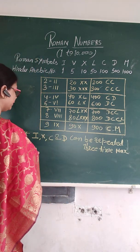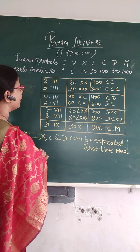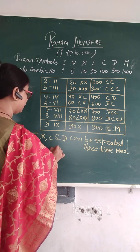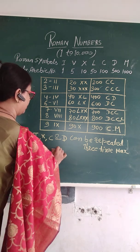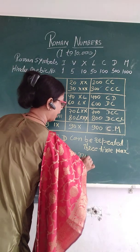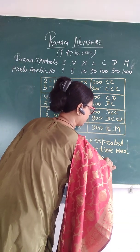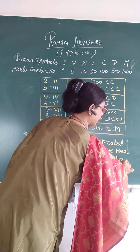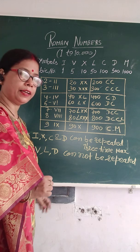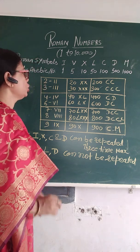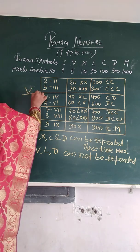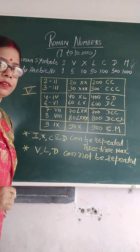And secondly, V, L, and D cannot be repeated — V, L, and D cannot be repeated. Kabhi bhi 5 ko sundar banana ke liye aise mat likho — yeh wrong ho jaayega.